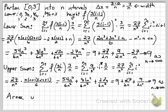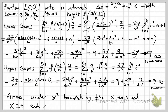Both the lower and upper sums go to the same place, so the area under x squared bounded by the x-axis between x equals 0 and x equals 3 is 9. It's a lot of work, which gives us appreciation for the fundamental theorem of calculus, which allows us to avoid dealing with all these upper and lower sums. Riemann sums are a little nicer — they just use the right-hand endpoint every time, without having to fuss with both lower and upper sums.